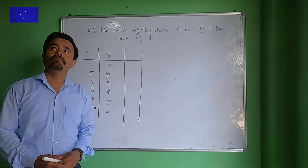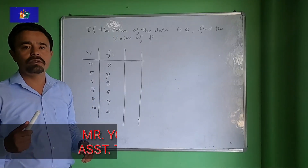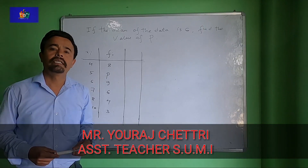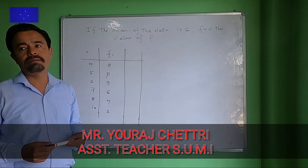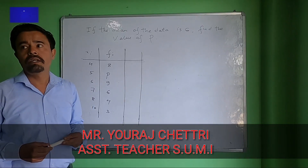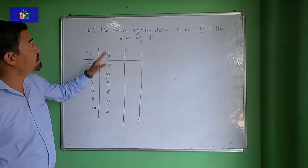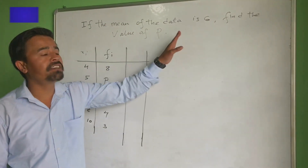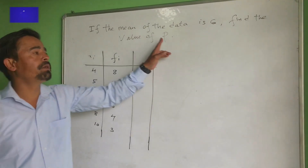Hello everybody. I am going to continue on this chapter. I am going to talk about statistics, mean chapter. If the mean of the data is 6, find the value of p.